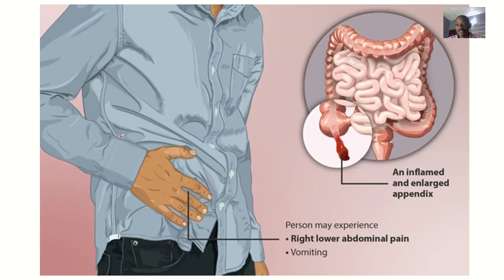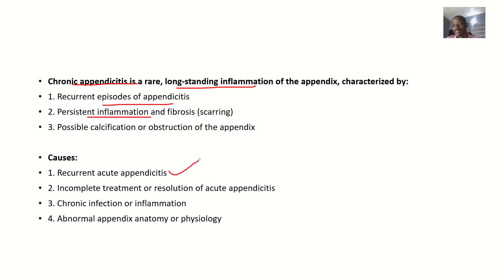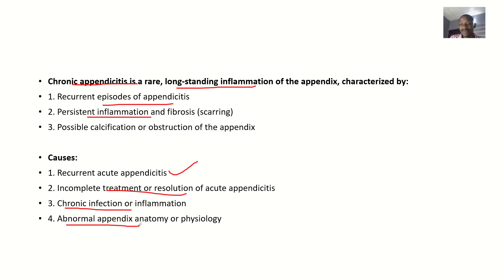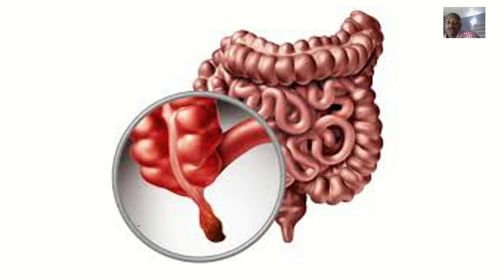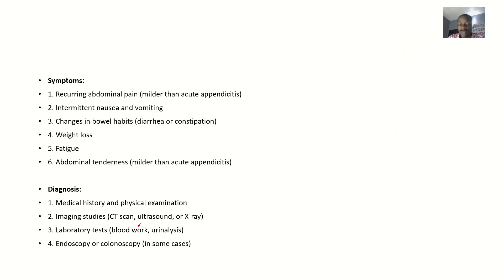What are the possible causes of chronic appendicitis? It can be caused by having appendicitis over and over again — it comes back, you take some drugs, it goes, then comes back again. It could also be from incomplete treatment or resolution of acute appendicitis — medications were given but not fully completed. It could be chronic infection or inflammation, abnormal appendix anatomy or physiology, congenital factors, or surgical complications.